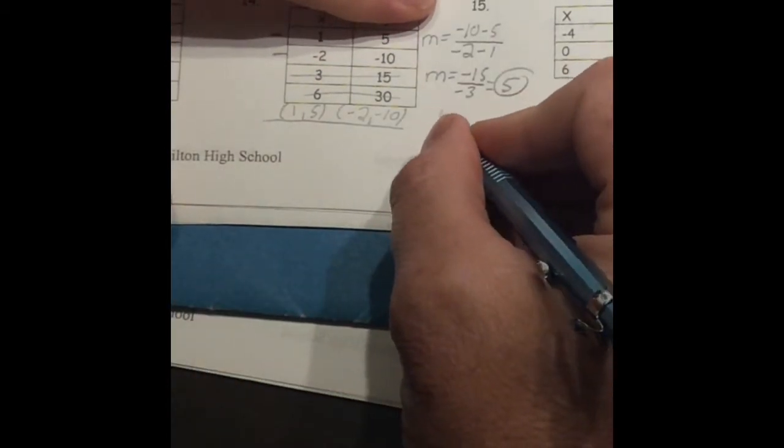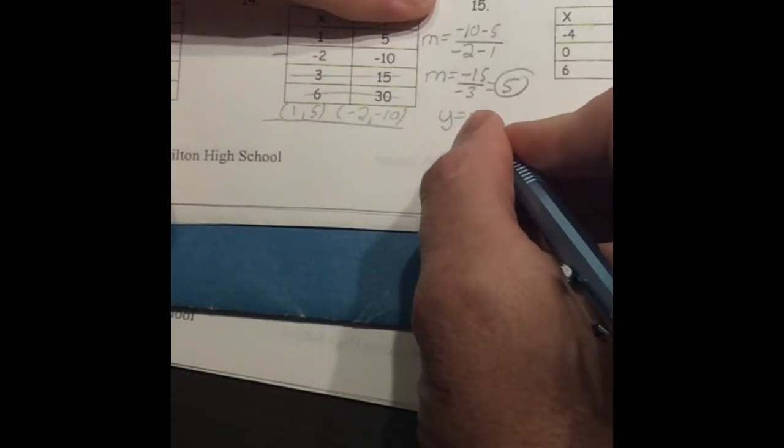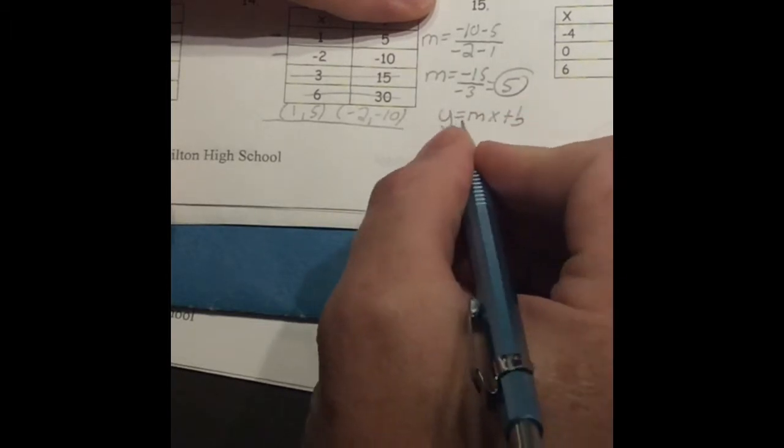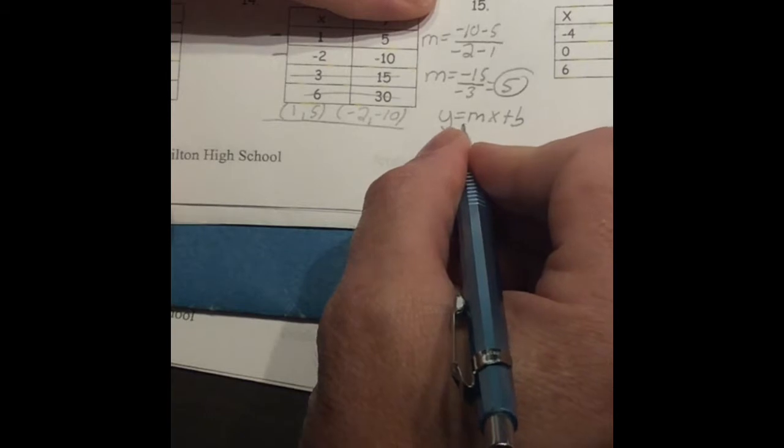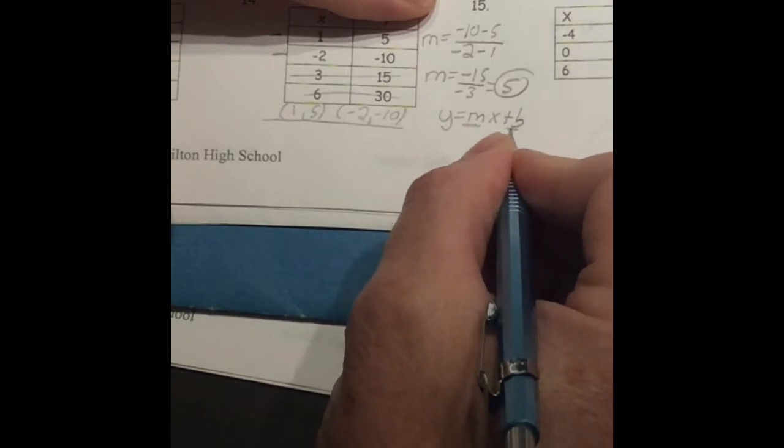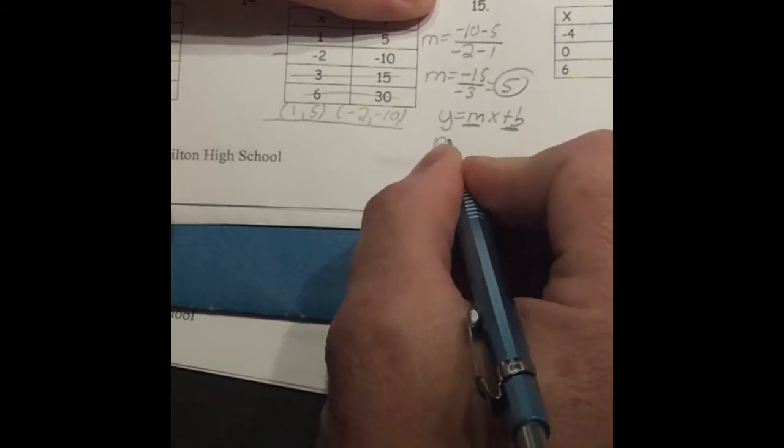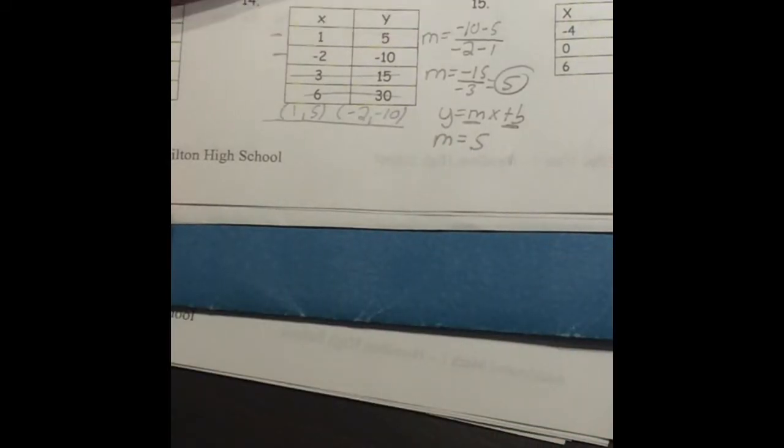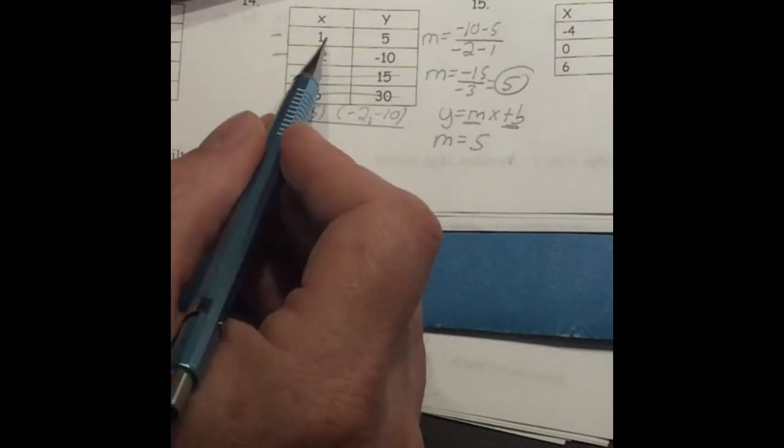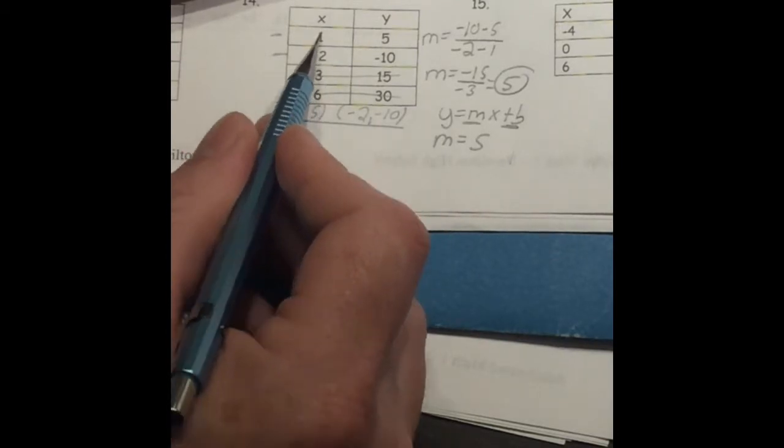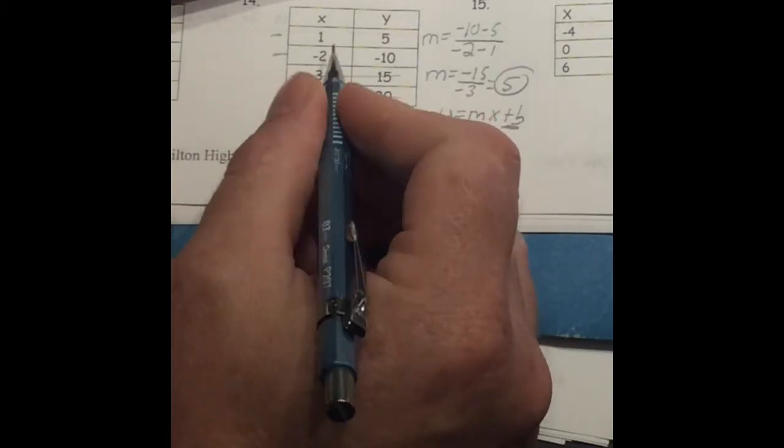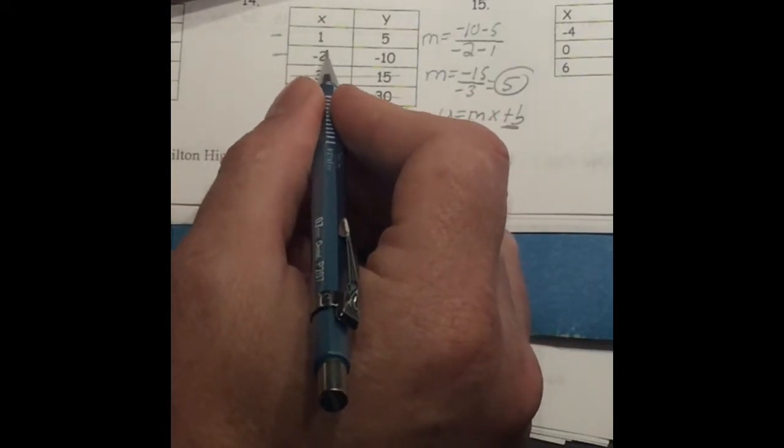All right. Remember to write an equation in slope-intercept form, we need both the slope and the y-intercept. I'm going to underline them as I say them. The slope and the y-intercept. And right now, we know our slope is 5. All right. There's a couple of ways to get the y-intercept. One way is to check to see if any of these x-values are 0. And they are not 0.